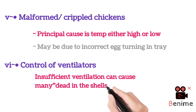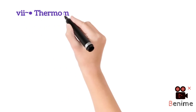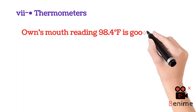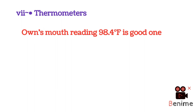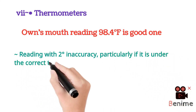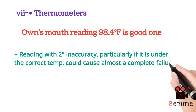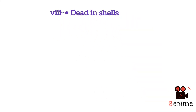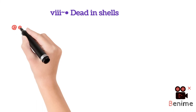The sixth cause is ventilator control. Insufficient ventilation can cause many dead-in-shell, as discussed in previous lectures — the smaller end of the egg has less porous shell than the broader end, so this should be noted. The seventh factor is thermometers. Thermometers should be checked before use in an incubator. If the mouth reading is 98.4 degrees Fahrenheit, the thermometer is working properly. A reading with two degrees inaccuracy, particularly if under the correct temperature, greatly influences hatchability.